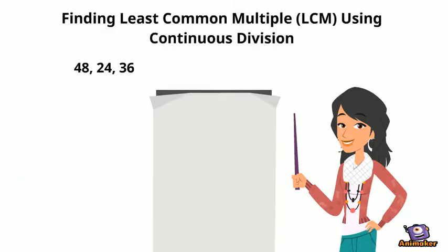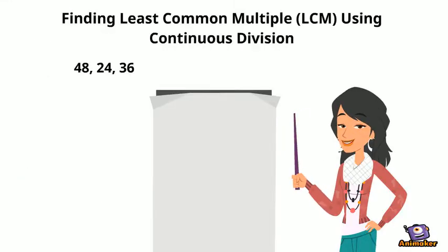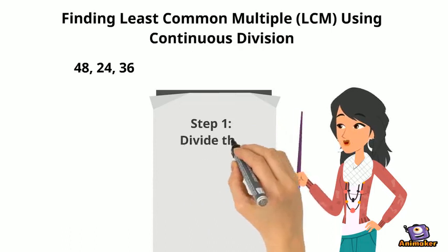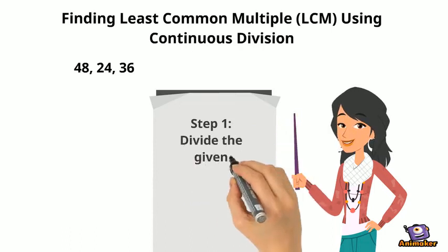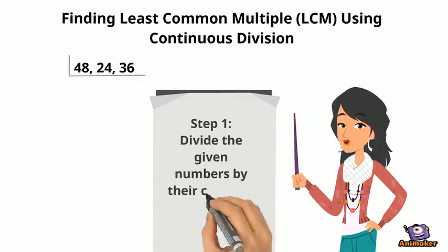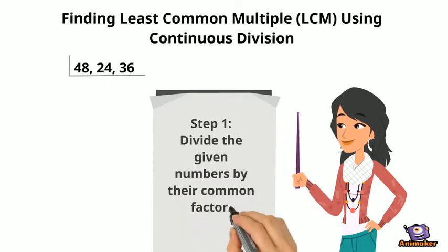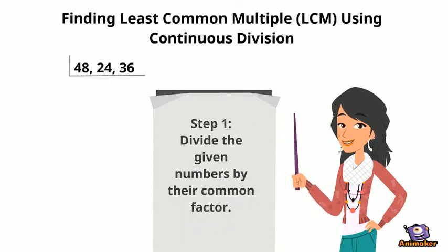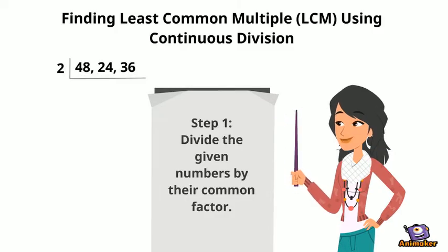Finding least common multiple using continuous division. Step 1: Divide the given numbers by their common factor. If all the given numbers are divisible by two, use two as their common divisor. Write this on the left side of the given numbers, and write the quotients below the numbers.